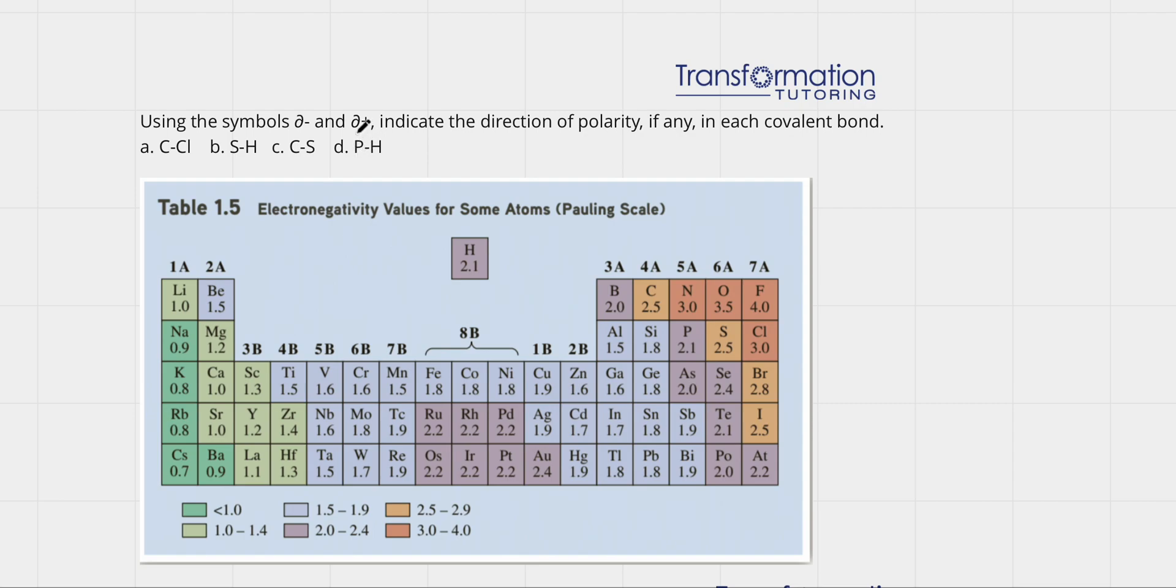...it will make the bond polar. The one that has a stronger electronegativity value will pull on the electrons more and will have a partially negative charge because negative electrons will be closer to it, and the other one will be partially positive.